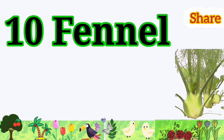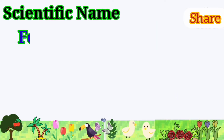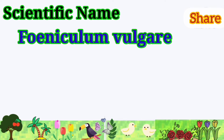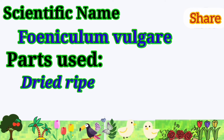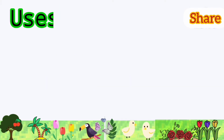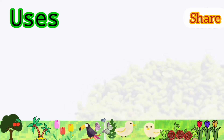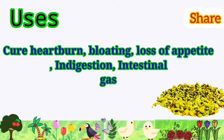Fennel: its scientific name is Foeniculum vulgare. Parts used are dried ripe seeds and oil. It is used to cure heartburn, bloating, loss of appetite, indigestion, and intestinal gas.